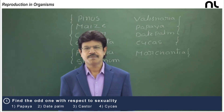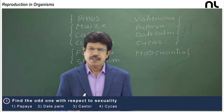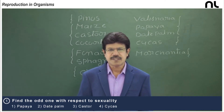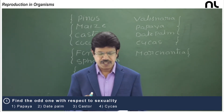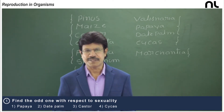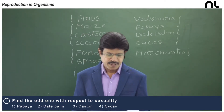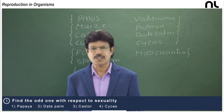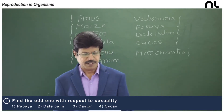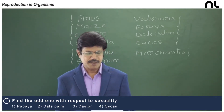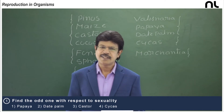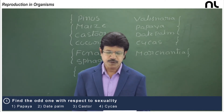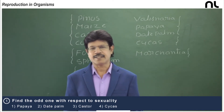Welcome to NEAT Login. These are interlinked conceptual questions in the topic Reproduction in Organisms. The first question: find the odd one with respect to sexuality. The options are: first, papaya; second, date palm; third, castor; and fourth, Cycas.